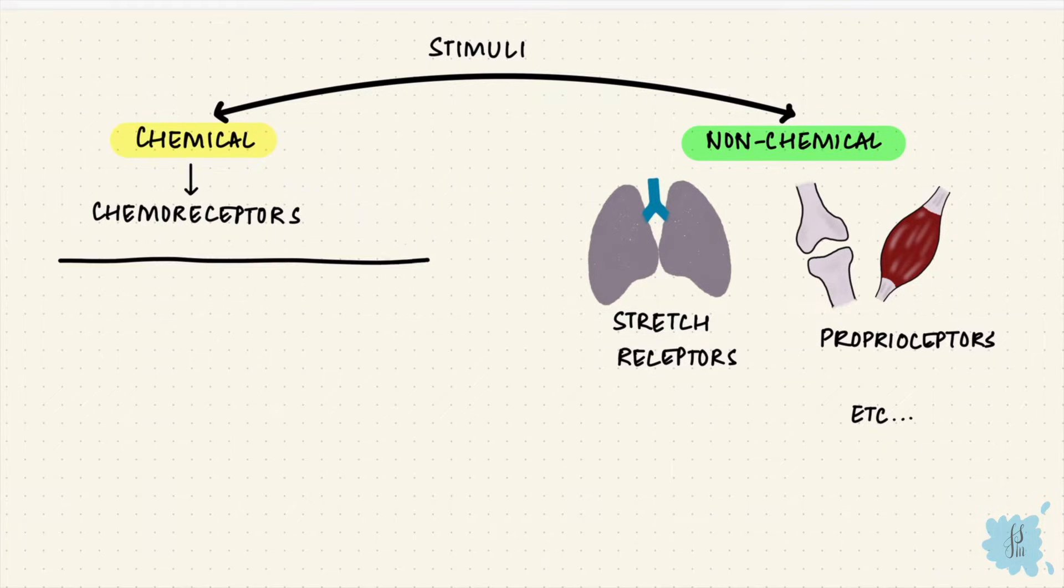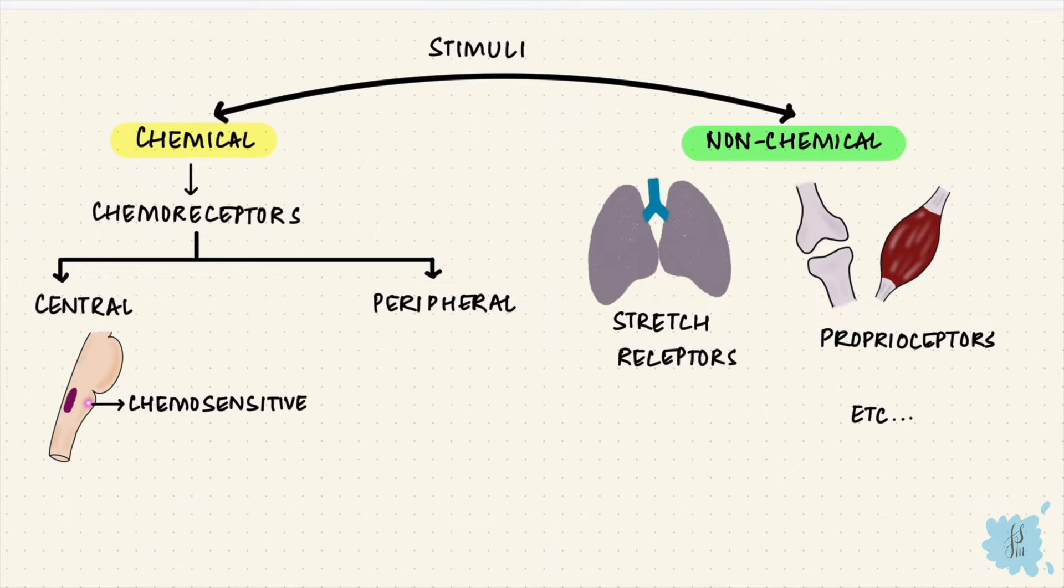There are two types of chemoreceptors, central and peripheral. Central are in the central nervous system, in the brainstem. They form a chemosensitive area in the ventral medulla. The peripheral chemoreceptors are in the periphery, the carotid and the aortic bodies.